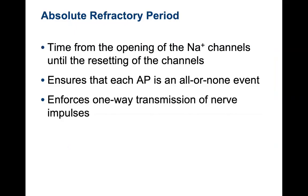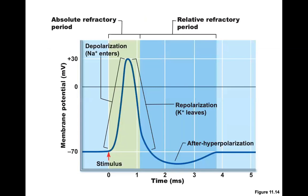During this period you will encounter the absolute refractory period — the time from the opening of the sodium channels until the resetting of the channels. This ensures that each action potential is an all-or-none event and enforces one-way transmission of nerve impulses. You must come back to resting membrane potential to start another action potential. An action potential takes in total about four milliseconds — each millisecond is one one-thousandth of a second — so these signals are happening instantaneously within milliseconds.